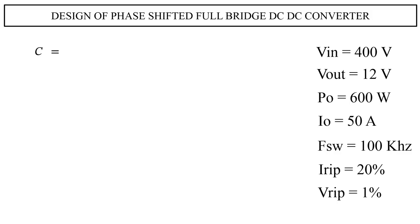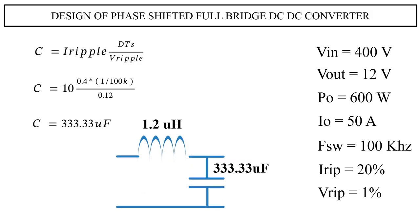Now substitute the values in the capacitance equation. Then C equals 10 times 0.4 times 1 divided by 100 kilohertz, all divided by 0.12, which is equal to 333.33 microfarads. So this completes the design of the filter circuit.